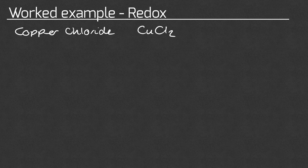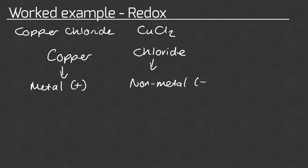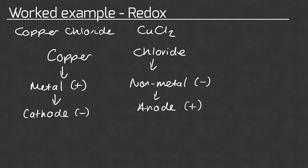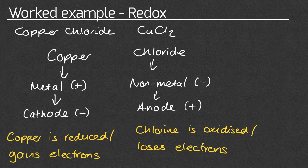We're now going to work through the copper chloride example again, this time focusing on reduction and oxidation. It's best to treat each part separately. Copper is a metal so it's going to be positive, so it moves to the cathode — the negative electrode. Chloride is a non-metal so it's negative, so it moves to the anode — the positive electrode. In order to lose its positive charge, the copper needs to gain electrons, so at the cathode the copper will be reduced. In order to lose its negative charge, the chlorine needs to lose electrons, so at the anode the chlorine is oxidised.